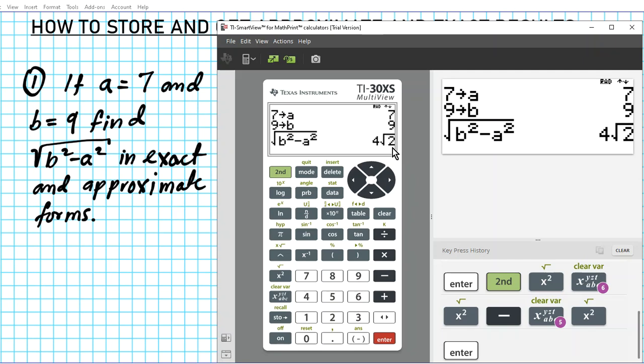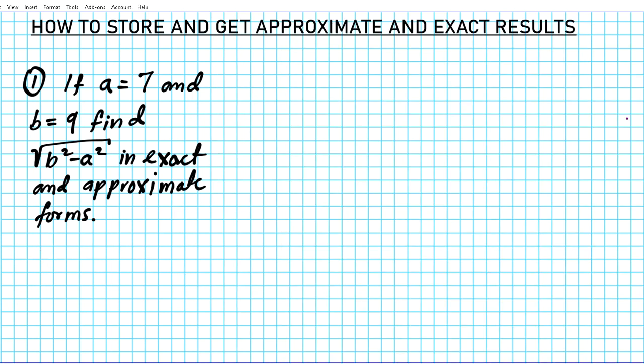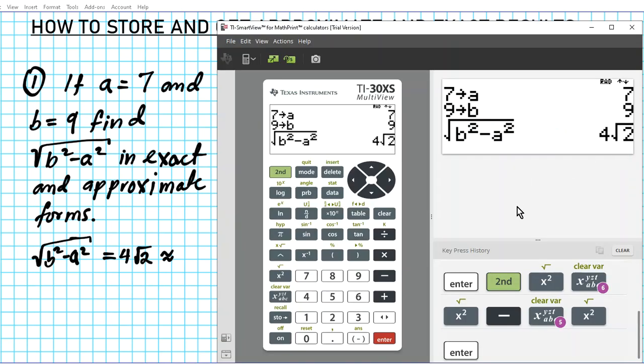So the answer to this expression, let's write it down. Square root of B squared minus A squared is equal to four root two. How about the approximate value of this? What is the approximate value of this? Let's also take a look at the approximate form. You should know how to do both with your calculator.